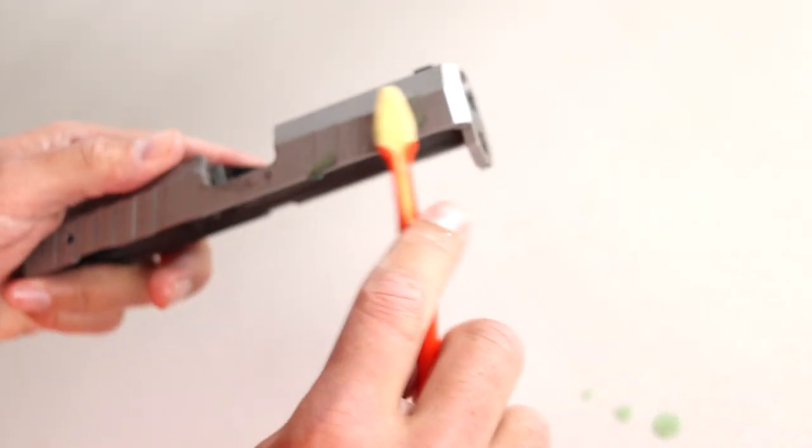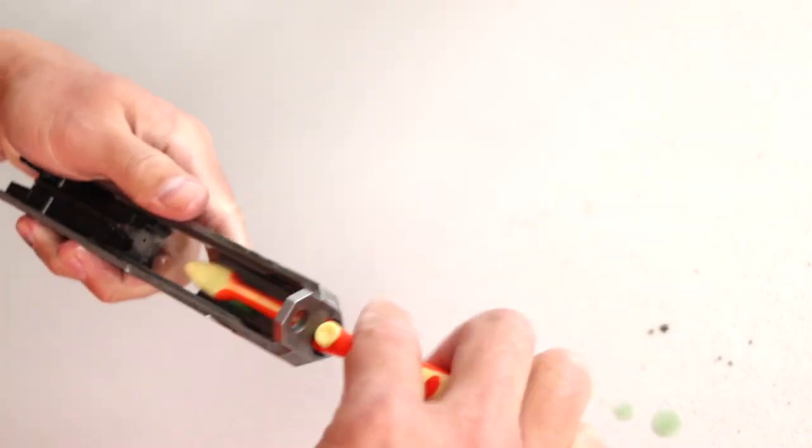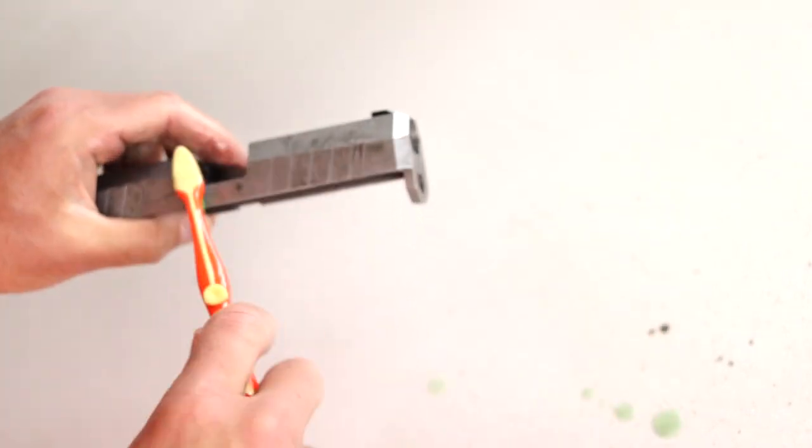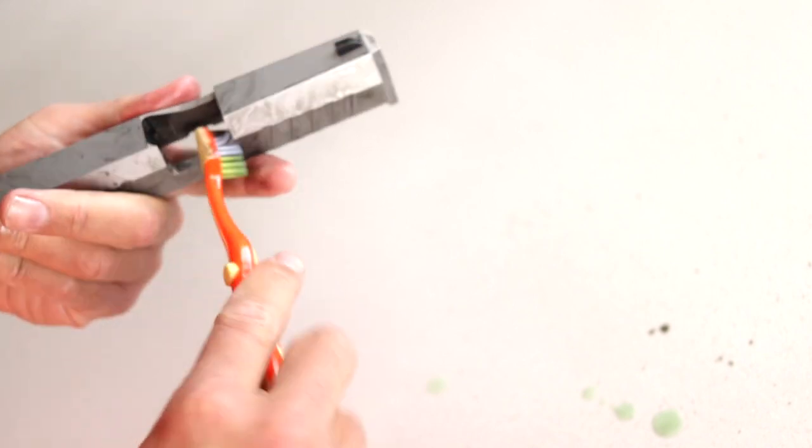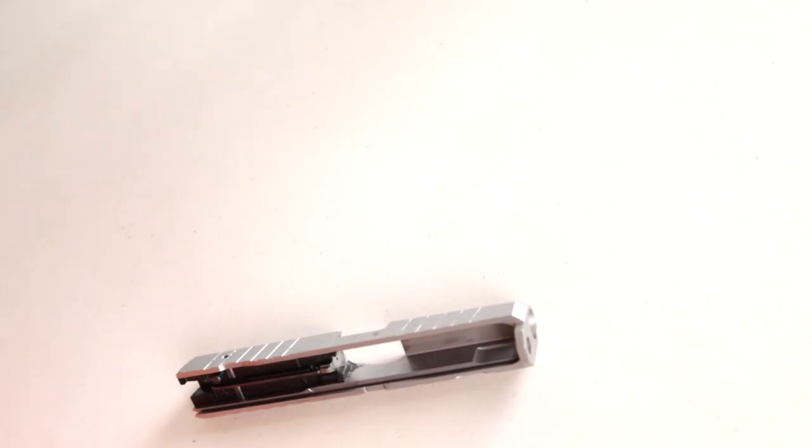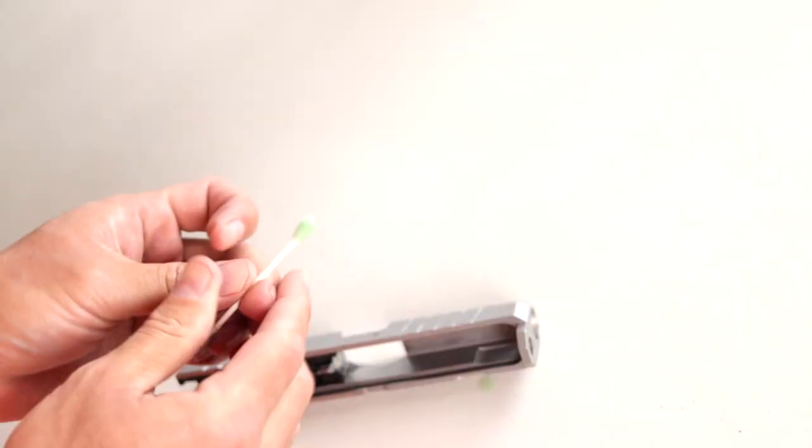Okay, I've got all the dirt loosened up on the inside of the slide. I'm going to add more CLP to the brush and start scrubbing the outside. I'm going to wipe off the excess CLP from the slide.